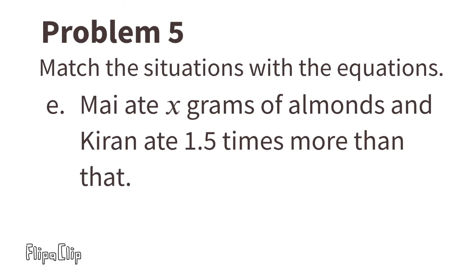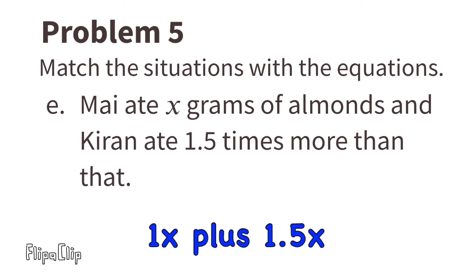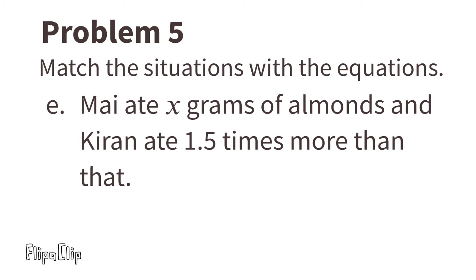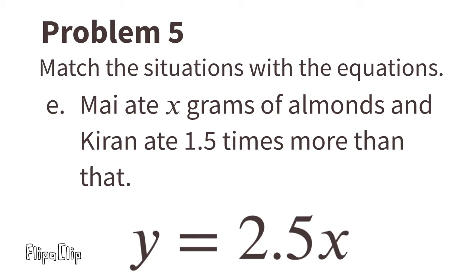Situation E: Mai ate x grams of almonds and Kieran ate 1.5 times more than that. We're looking for an equation where y equals 1.5 times more than x. So one x plus 1.5x equals 2.5x. The matching equation is y equals 2.5x.